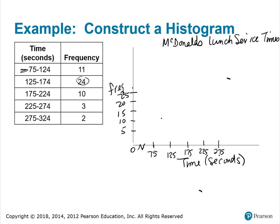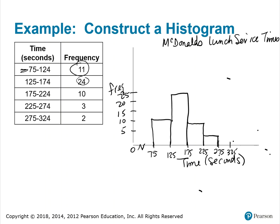The frequency for the first class, 75 to 124, is 11, so the bar rises just above the 10 mark. The second class frequency is 24 — remember these are adjacent bars — so I rise up to the 24 mark. The class 175 to 224 has frequency 10, which is slightly lower than class one. Then 3 for the next class and 2 for the last. I'll mark 325 to fit that last class. There is the histogram.